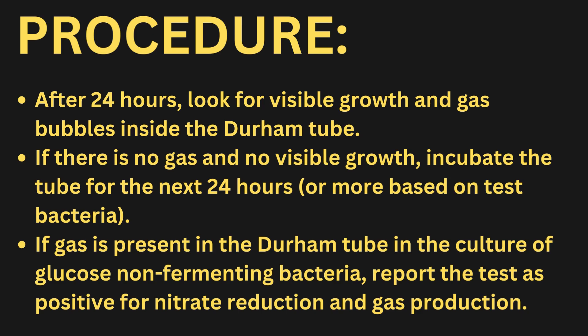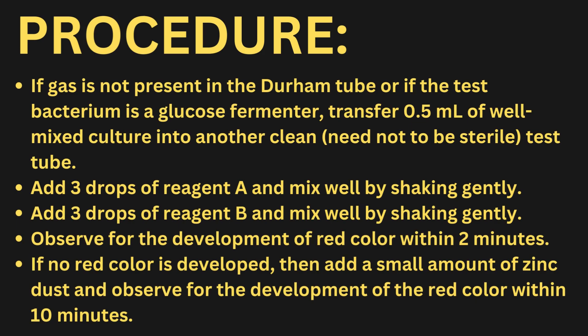If there is no gas and no visible growth, incubate the tube for the next 24 hours or more based on the test bacteria. If gas is present in the Durham tube in the culture of glucose non-fermenting bacteria, report the test as positive for nitrate reduction and gas production. If gas is not present or if the test bacterium is a glucose fermenter, transfer 0.5 mL of well-mixed culture into another clean test tube. Add three drops of reagent A, mix well by shaking gently, then add three drops of reagent B and mix. Observe for the development of red color within two minutes. If no red color develops, add a small amount of zinc dust and observe for red color within 10 minutes.